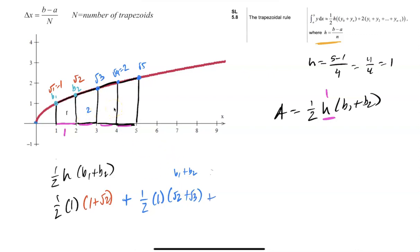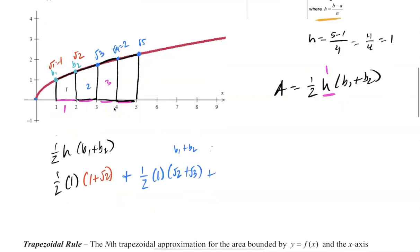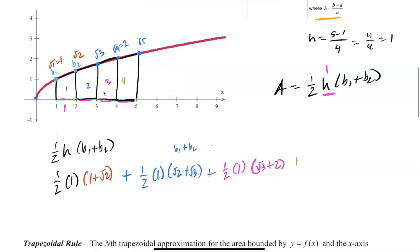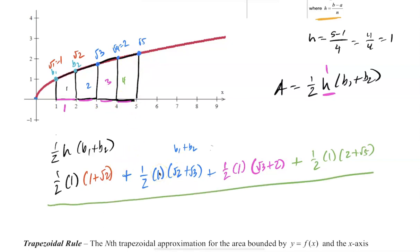Trapezoid 3: (1/2)(1)(√3 + 2). Trapezoid 4: (1/2)(1)(2 + √5). That's our answer. Most of the time you just leave it like this — it's very rare that you need to simplify further. If they do want you to simplify, just plug it into your calculator.